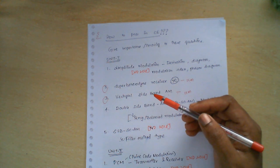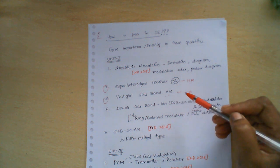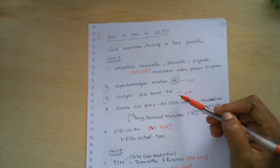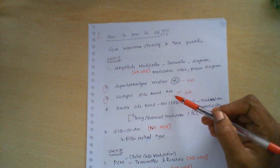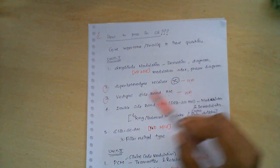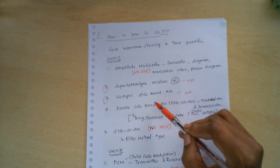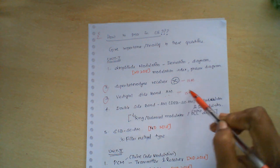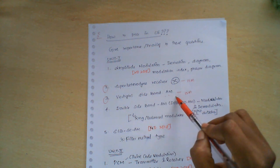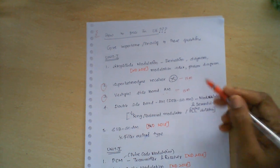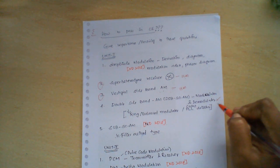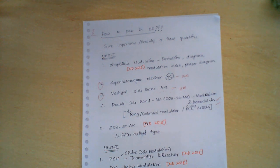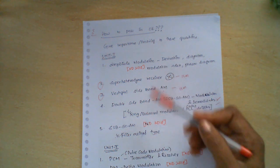The vestigial sideband question is an indirect question. How they asked it is: 'Explain about the modulation technique used for television.' You know the application of vestigial sideband is nothing but the television system, so they asked about the modulation technique used in television signal rather than directly asking about VSB. This was asked under 15 marks. This can be expected again in November–December 2019, and the superheterodyne receiver can also be asked.